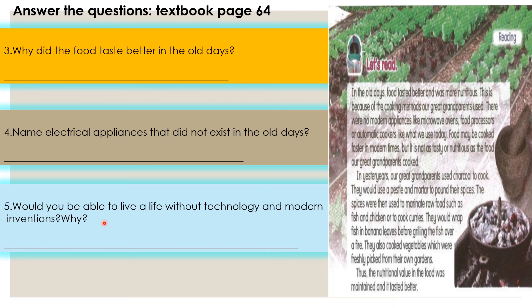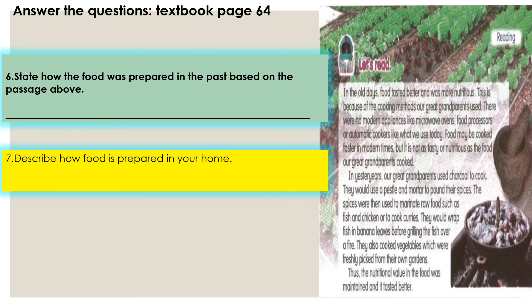Number five: would you be able to live a life without technology and modern inventions? For this question, you need to give your reason. Do you think you can live a life without technology? So, give your answer and your opinion. Let's proceed with number six: state how the food was prepared in the past based on the passage above. And number seven: describe how food is prepared in your home.